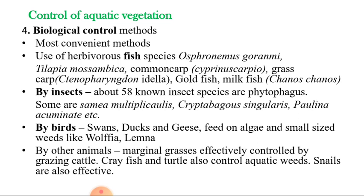The fourth type is the biological control method. Biological methods are considered the most convenient and cheap method for fish culture. Various herbivorous fish species are used as aquatic weed control agents in fish ponds, such as Osphronemus gorami, Tilapia mossambica, common carp (Cyprinus carpio), grass carp, Tench, goldfish, and milkfish.